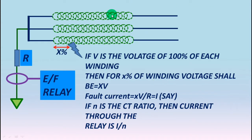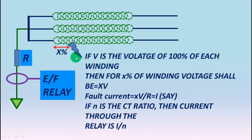Suppose this is the generator winding. These are the three phases and this x is where the earth fault has occurred. This x percent is the percentage of the total winding length. Whatever voltage the generator is generating is for the full 100% of the winding. So if V is the voltage of 100% of each winding, then for x percent of winding, the voltage will be xV, which is obviously less than V. And the fault current — if the generator is earthed through resistance R — will be xV divided by R, say I. I is the primary fault current.